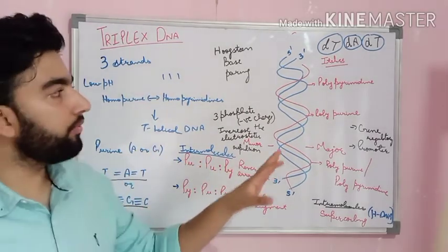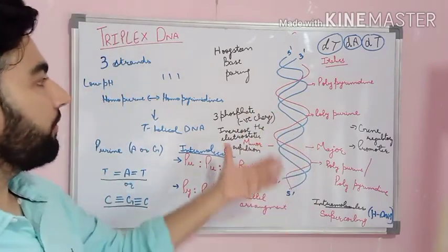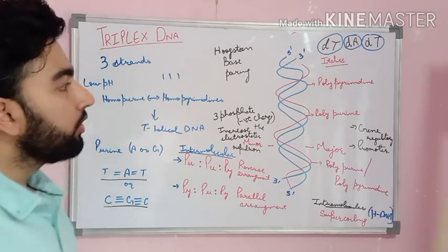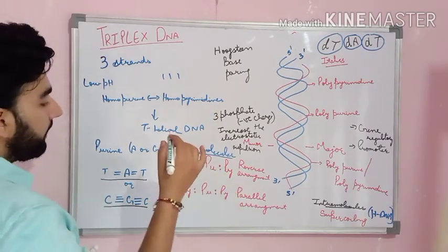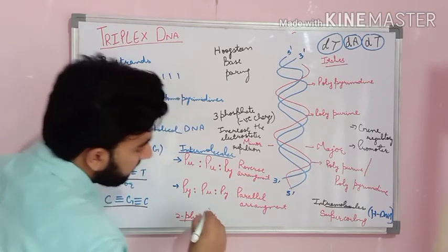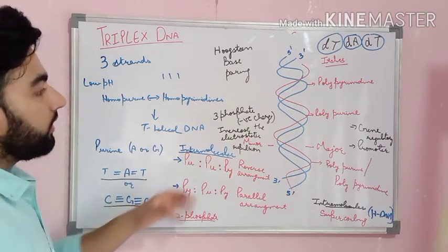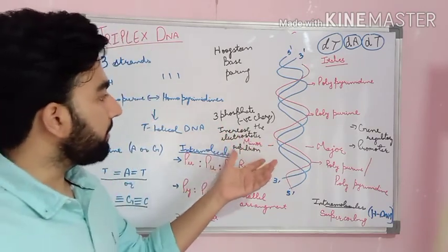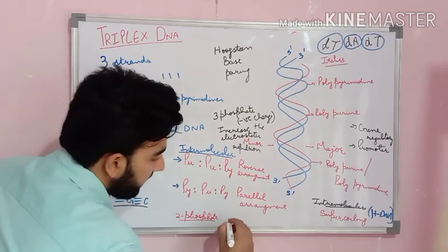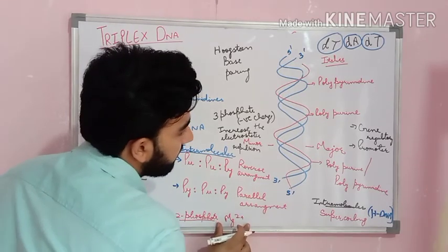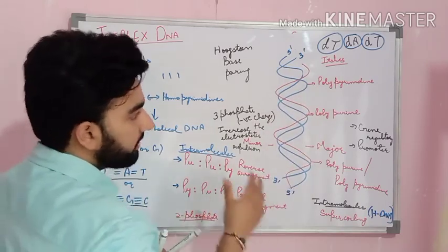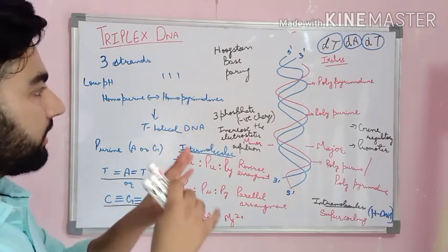Because of the phosphate chains' negative charge, electrostatic repulsion leads to destabilization in triple helical DNA. In the case of double helical DNA, there are two phosphate chains and also electrostatic repulsion, but magnesium ions are present. These magnesium ions bind with the phosphate chains along the sides of the double helical DNA and help in the stabilization of the double helical structure.